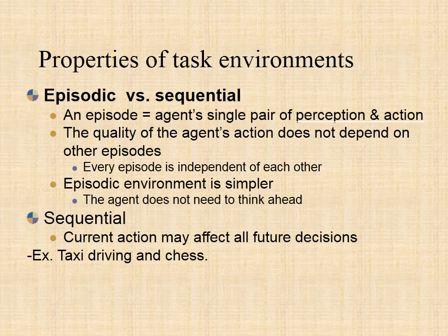In an episodic environment, there is a series of one-shot actions, and only the current percept is required for the action. Sequential environments require the memory of past actions to determine the next best action. As an example, an artificial intelligence system that looks at radiology images to determine if there is a sickness is an example of an episodic environment — one image has nothing to do with the next. A crossword puzzle or taxi driver is sequential, as one action leads to another action.